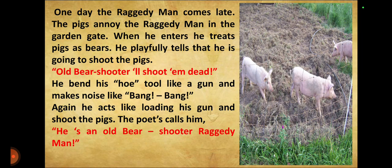One day the Raggedy man comes late. The pigs annoy him at the garden gate. When he enters, he treats the pigs as bears — he playfully tells them he is going to shoot them. He bends his hoe tool like a gun and makes a noise like bang bang, then acts like loading his gun and shooting the pigs. The poet calls him an old bear shooter Raggedy man.